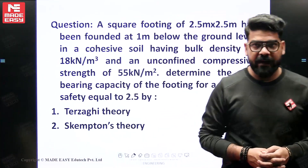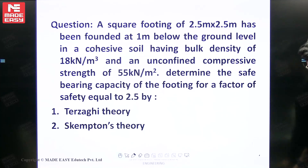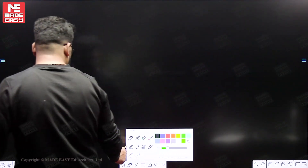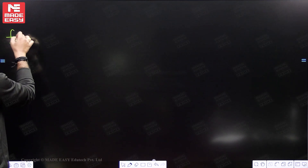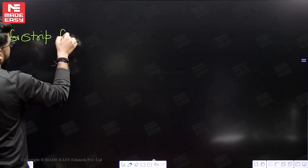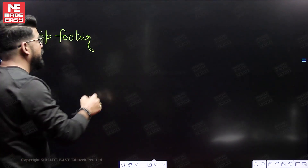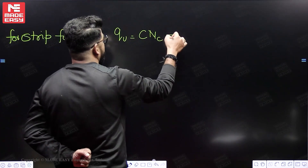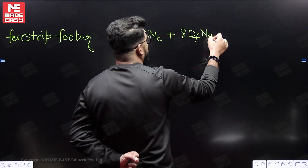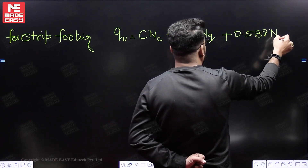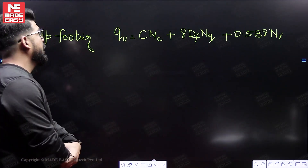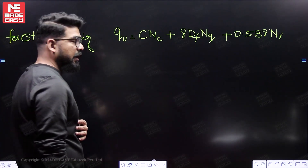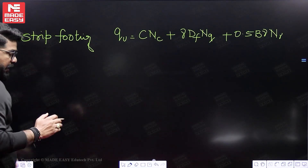The first question is related to Terzaghi's theory and Skempton's theory. When we talk about Terzaghi's theory, remember this: Terzaghi's theory is valid for strip footing. For strip footing, the equation is: ultimate bearing capacity QU = CNC + γ·Df·NQ + 0.5·B·γ·Nγ, where the third γ is for soil below the base of footing and the second γ is for above the base. Here C is cohesion, and NC, NQ, Nγ are Terzaghi's bearing capacity factors which depend only upon φ.